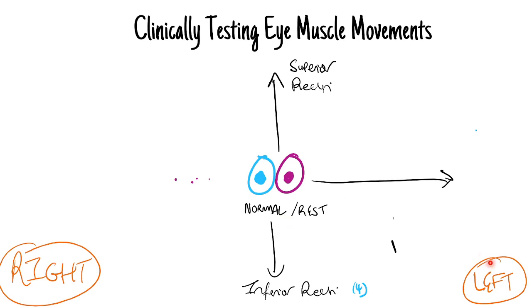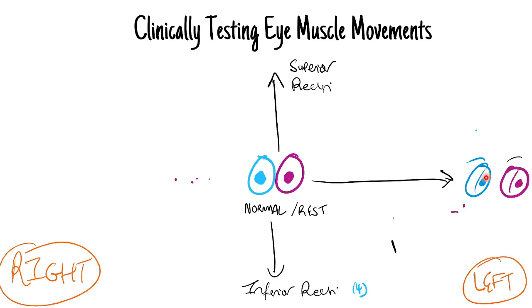If we ask our patient to look towards their left, on the left eye it's looking outwards - that's laterally - so that's the lateral rectus, testing nerve 6 in the patient's left eye. On the right eye, it's looking inwards towards the nose, so you're testing the medial rectus, innervated by nerve 3.